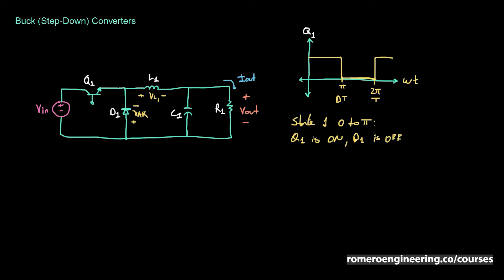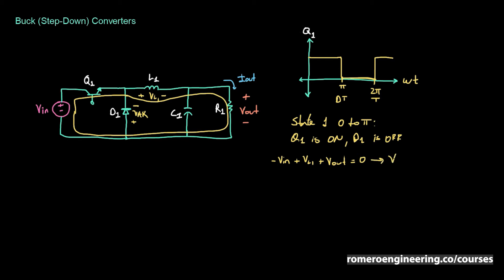Knowing that D1 is off, we can write the voltage loop equation around the circuit. The circuit path goes through V_in, through Q1, then D1 is off so it looks like an open circuit, then through L1, and through V_out back to V_in. Applying KVL around that loop: minus V_in plus V_L1 plus V_out equals zero. Therefore, the voltage across the inductor V_L1 is equal to V_in minus V_out.